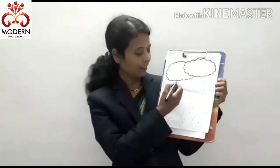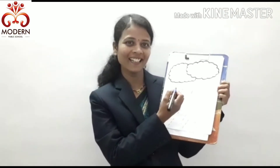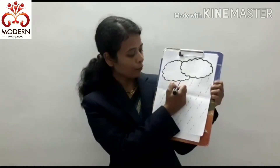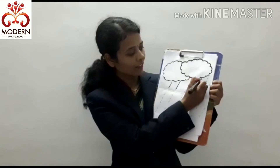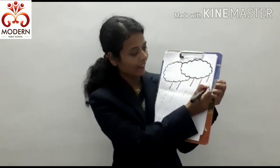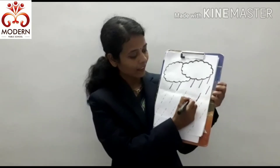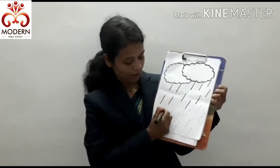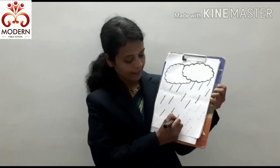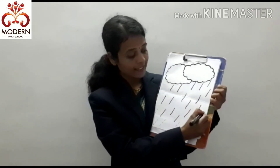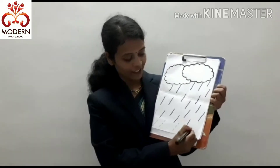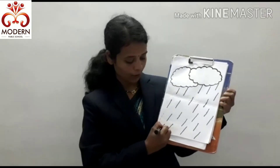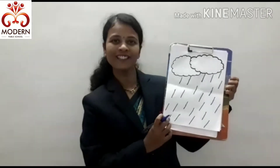Now we join the dotted line and complete the slanting line. Let's join — from up to down. These are slanting lines, from up to down. Which line? Slanting line, from up to down.